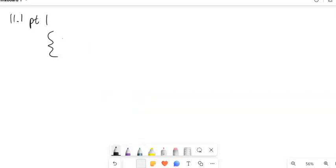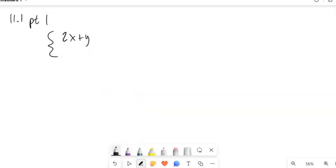I'm going to write a system up here. 2x plus y equals 15, and 3x minus y equals 5. So this is a system of equations. This bracket shows that these are equations at the same time. So we're looking for x, y that make both of these true at the same time.